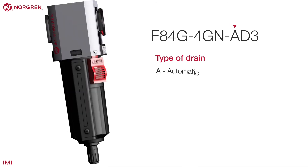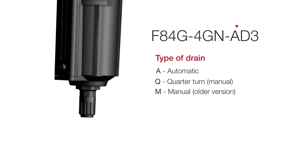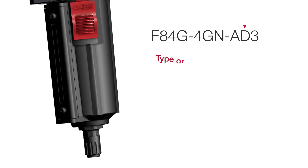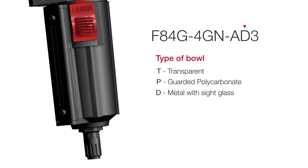The eighth digit represents the type of drain selected: A for automatic and Q for quarter turn, more commonly known as manual or M. The ninth digit represents the type of bowl — in our example, it's D, indicating a metal bowl with a sight glass.